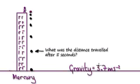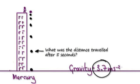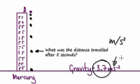Let me give you some more practice. I'm standing on top of a building which happens to be on Mercury. The gravitational pull of Mercury is 3.7 meters per second squared. Sometimes this is written as m/s squared, or sometimes it's written as m s to the minus 2.